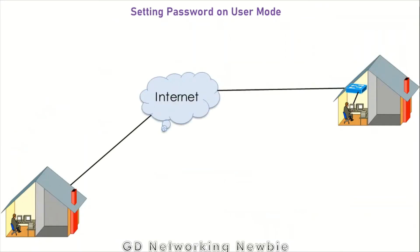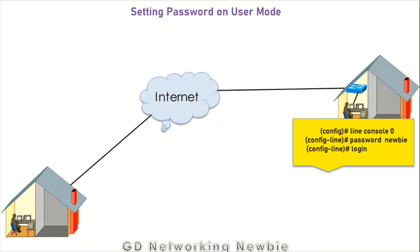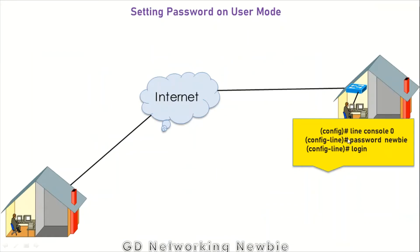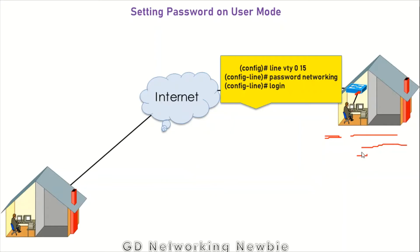We have already discussed in a previous video how to set the password on the console port of the switch. From global configuration mode, the commands are: line console 0, then password, then login. With this set of commands we can set a password on the console port. Today we want to set a password on the Telnet connection, or on the VTY line.